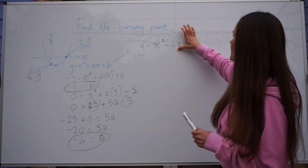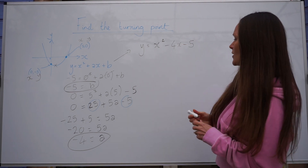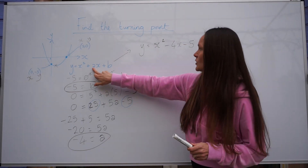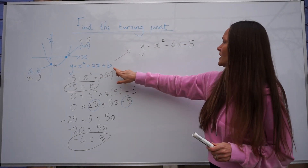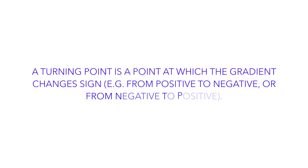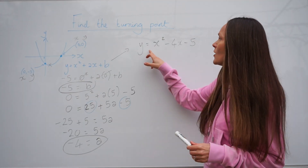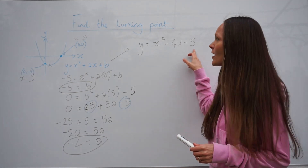I made a small mistake there — that's meant to be an x. So I've just changed a to minus 4 and b to minus 5. Here is the equation of our sketch: y equals x squared minus 4x minus 5.